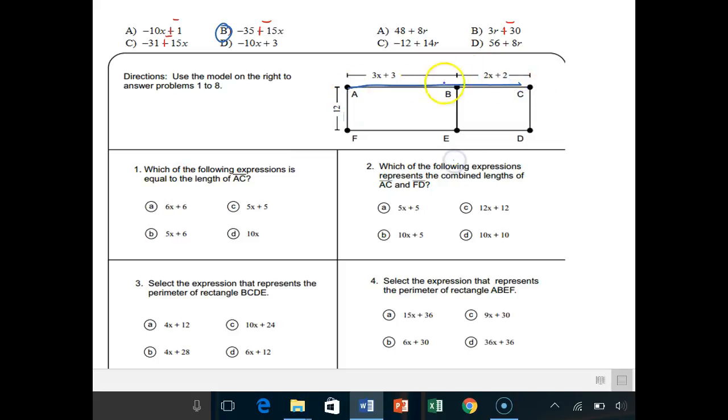They want to know this length right here. That chunk is 3x plus 3 and that chunk is 2x plus 2. So if I wanted to find the total length, I just add them together and find my like terms. 3x plus 2x and then 3 plus 2. 3x plus 2x is 5x, 3 plus 2 is 5. So C.